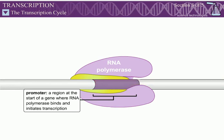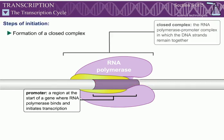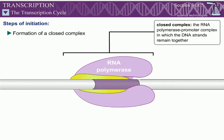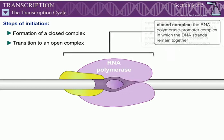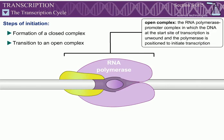The RNA polymerase and promoter form a closed complex. In the second step, the closed complex undergoes a transition to the open complex. The pincers at the front of the enzyme clamp down tightly on the downstream DNA. Sigma also changes conformation, and the DNA strands separate, forming a bubble of single-stranded DNA.